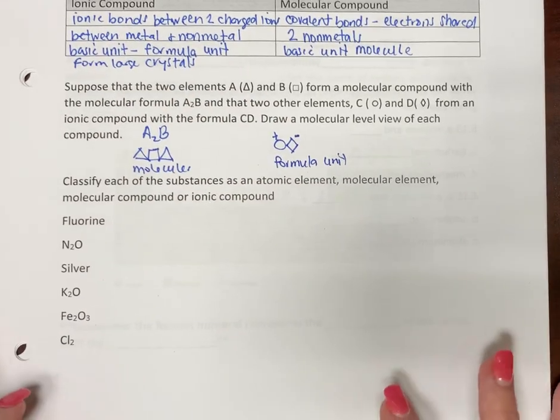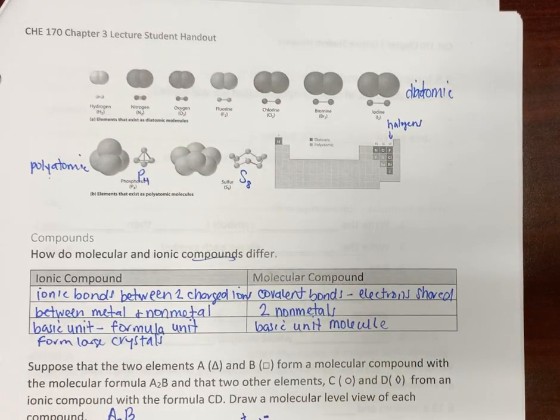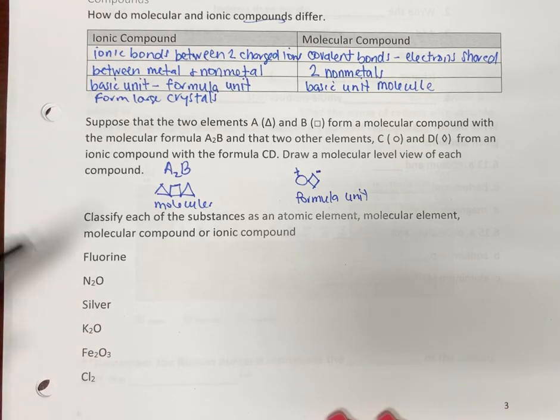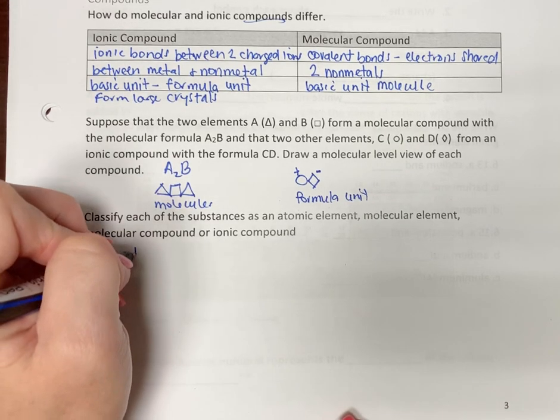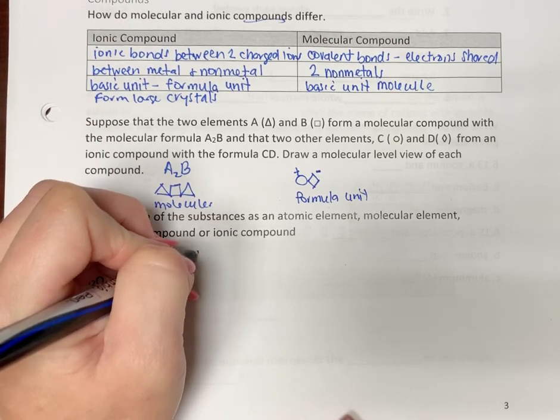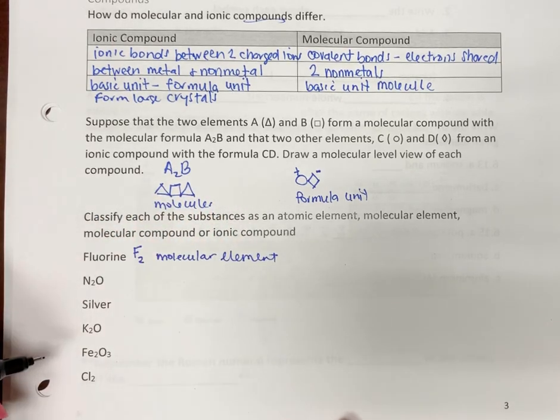Now, let's look at these and refer back to this chart or your periodic table. This is not a quiz. So, let's look at fluorine. How does fluorine exist in nature? Fluorine exists in nature as F2, so it would be a molecular element. Because it's only fluorine, but there's more than one of them.